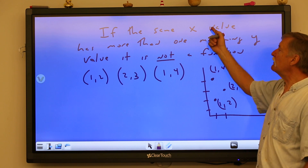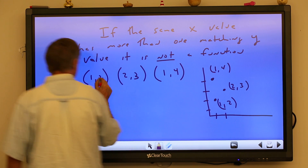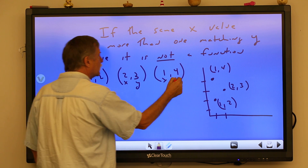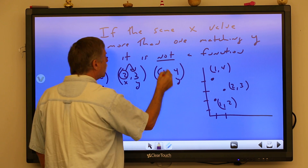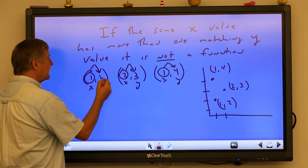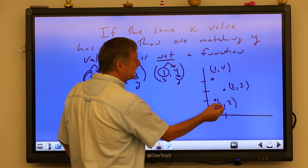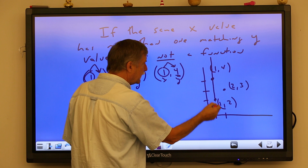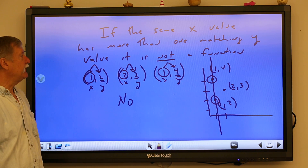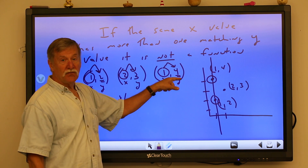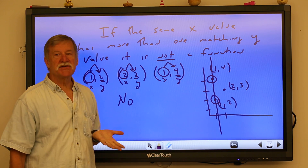If the same x value has more than one matching y value, it is not a function. Looking at ordered pairs — x and y — here I see one matched with two, two matched with three, but then one is matched with four instead of two. These are two different y values for the same x value. If we graph this: one-two, two-three, and one-four — a vertical line would go through two y values. So no, this does not represent a function. An x value can only go with one y value; if it's the same x, it always has to give the same y.